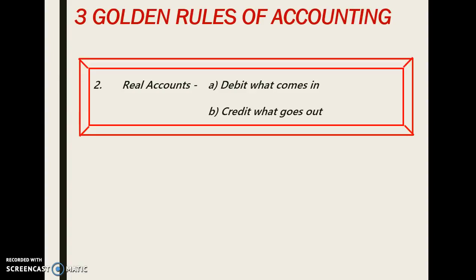The second golden rule of accounting is with respect to real account. Real account means all those assets — land, building, plant and machinery, etc. The rule says: debit what comes in, credit what goes out. Real accounts normally have a debit balance. When we purchase assets or any additions are made, it should be debited; similarly when it goes out or its balance reduces, we will credit it.